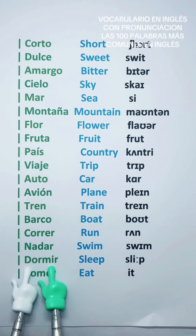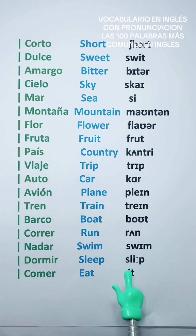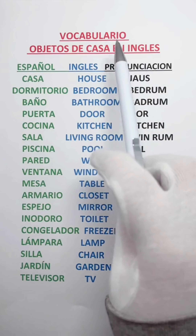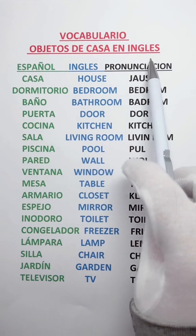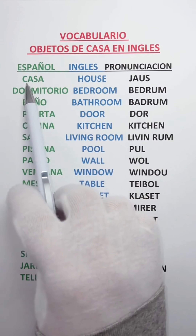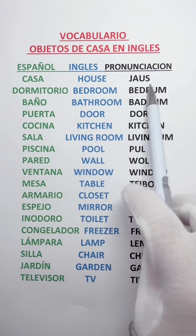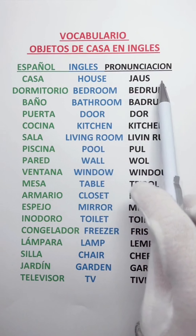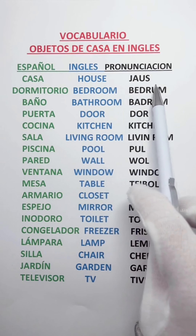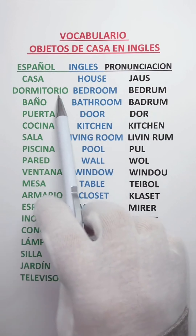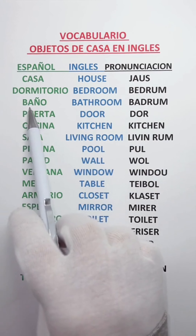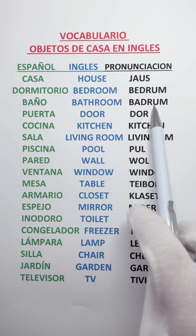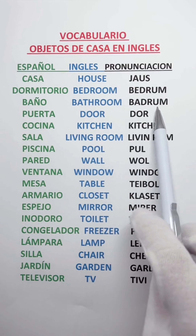Dormir — Sleep. Aprende fácil este vocabulario de objetos de casa en inglés. Comencemos. Casa — House. Repite conmigo. House. Dormitorio — Bedroom. Baño — Bathroom.